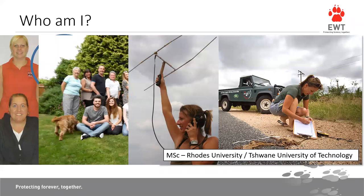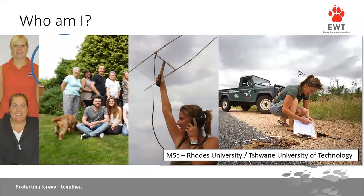My master's was based on looking at the number of roadkill in one particular area of the country, and the reasons why roadkill happens. Does it happen because it's close to a water source? Or is there poor fencing by the roadside? What season is it? There were various things that we looked at. That was how I got started, never believing it would lead to greater things — and this was almost 10 years ago, also through the Endangered Wildlife Trust.